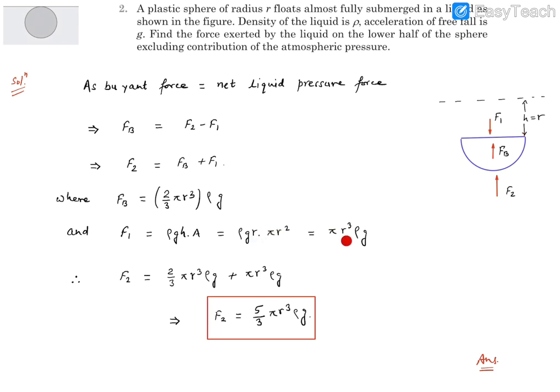The area is going to be A, which is basically π r². So F1 is π r³ rho g. Now we need to find F2. We can put these values of Fb and F1 into this expression, so F2 comes out to be 2/3 π r³ rho g plus this F1, which is π r³ rho g. When you combine together, you'll find it as 5/3 π r³ rho g.